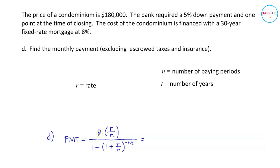So P is $171,000, the amount of mortgage. The time is 30 years and the rate R is 8%, or equivalently in decimal, 0.08.